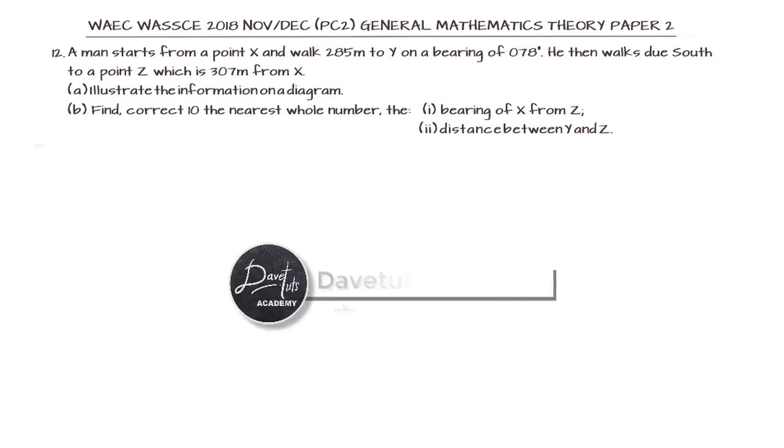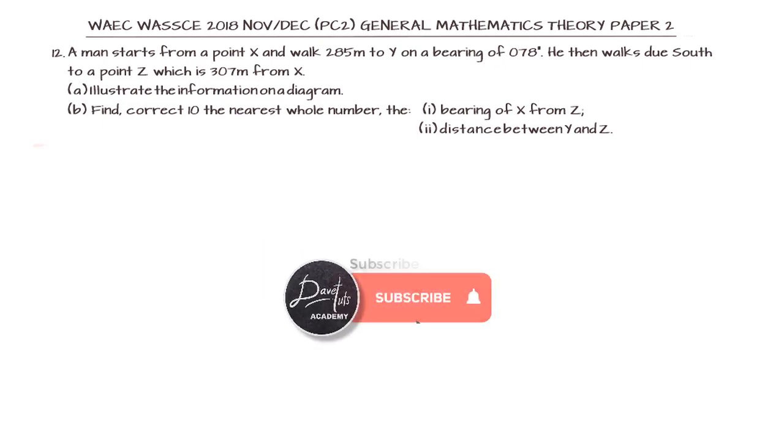Bearing and distance is going to be the focus of our question from the 2018 WAEC GC exam paper. We are going to be using solution to triangles, the sine rule, the cosine rule, and our work is cut out for us. So let's head over and solve our question together.